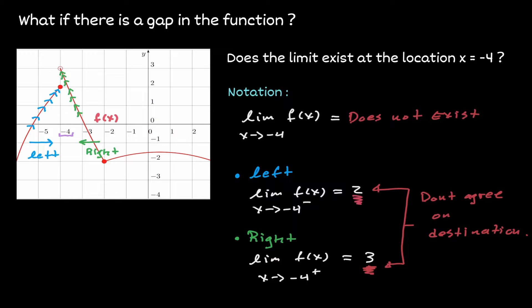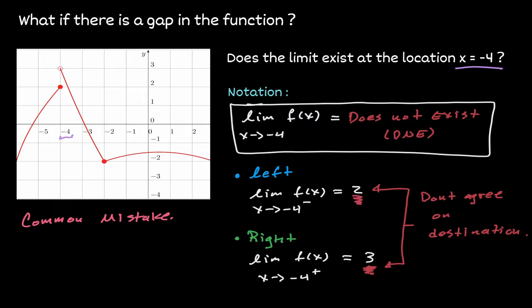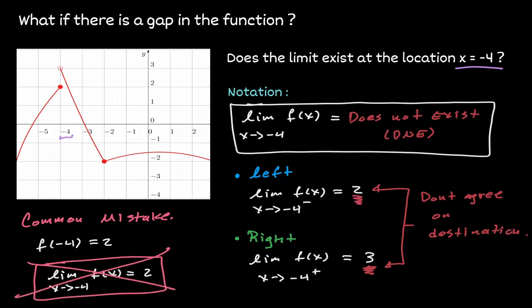For a limit to exist, the value approached from the left must equal the value approached from the right. A common mistake here would be to evaluate the function at x equals negative 4, get an output of positive 2, and conclude the limit is 2 — but that is wrong. In limits, we are not concerned about what is happening exactly at x equals negative 4, but rather what we are approaching as we get closer, and the left and right values do not agree.